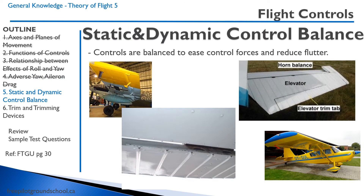There are a number of static and dynamic control balances designed into aircraft. Controls are typically balanced in order to ease the control forces and reduce flutter. For example, we might have mass balance. Walking around a Cessna 172, your instructor will have probably pointed out these things on the ailerons — these are heavy weights that increase the weight of that aileron and prevent flutter at high speed. This is a mass balance; it increases the mass, preventing flutter.